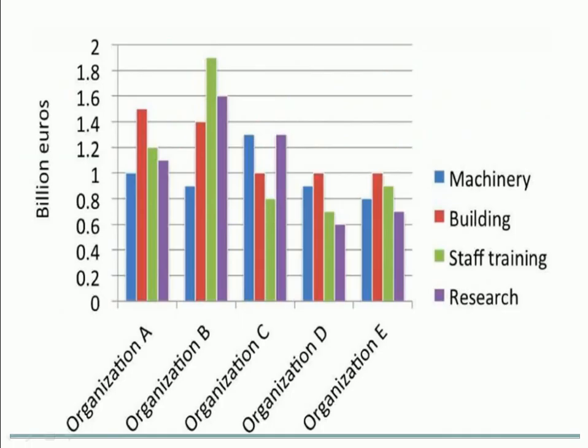There are five organizations — companies A, B, C, D, and E — and there are four sectors in which they have invested: machinery, building, staff training, and research. The values are given in billions of euros.